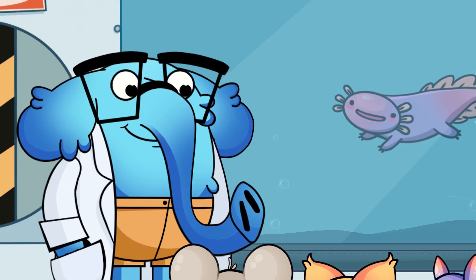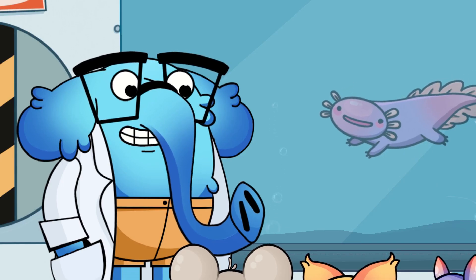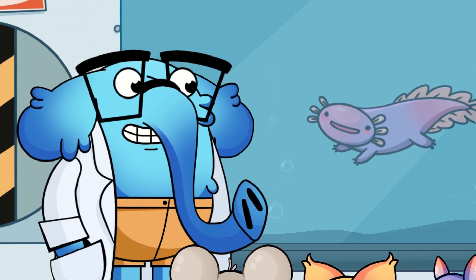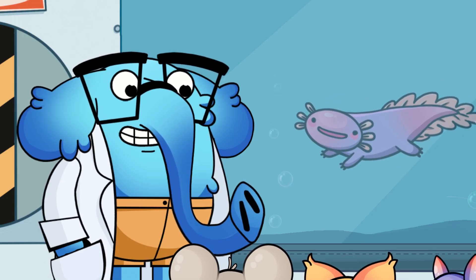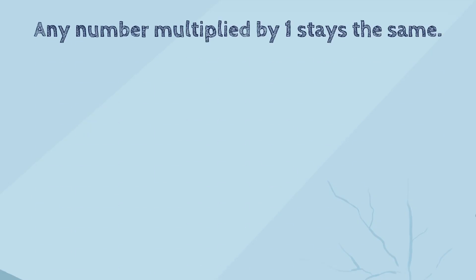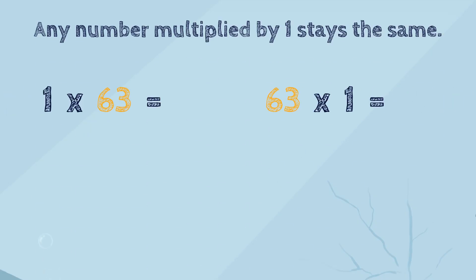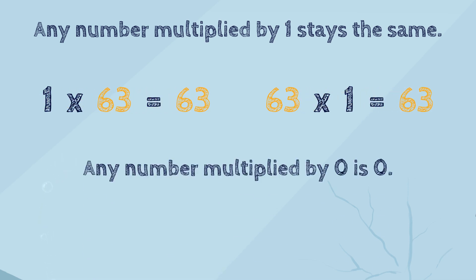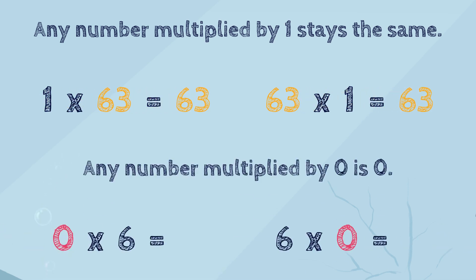Zero! That's right. Let's repeat the tricks that we've learned today. The first trick is that any number multiplied by one stays the same. The second trick is that any number multiplied by zero makes zero.